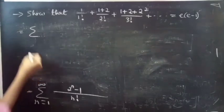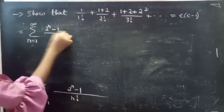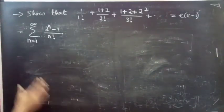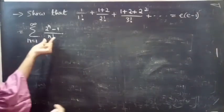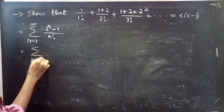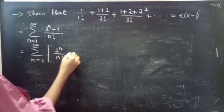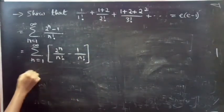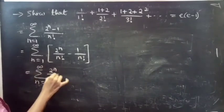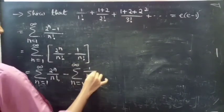This equals summation n equals to 1 to infinity of 2 power n minus 1 by n factorial. In the numerator you are having 2 terms and in the denominator 1 term, so you can split the expression into 2 terms: summation n equals to 1 to infinity of 2 power n by n factorial, minus summation n equals to 1 to infinity of 1 by n factorial.